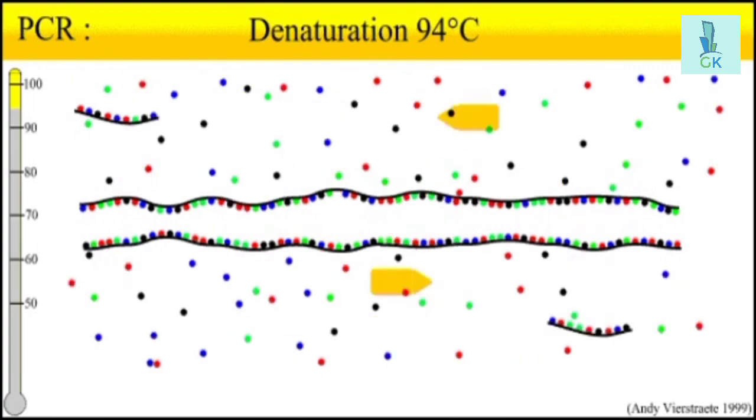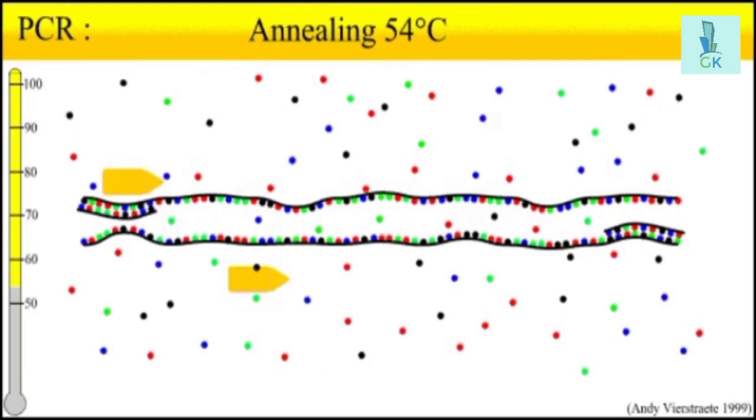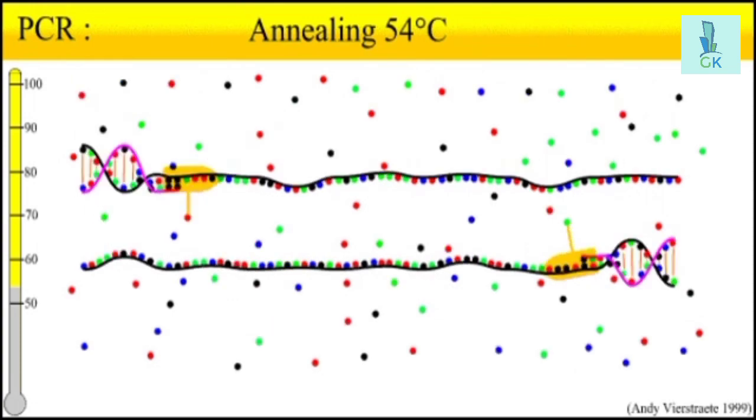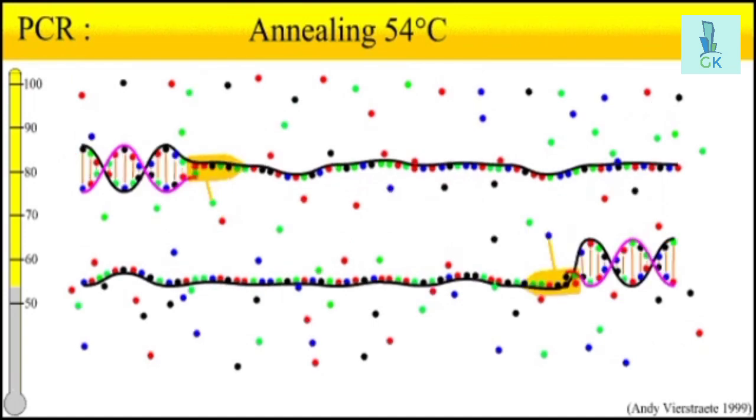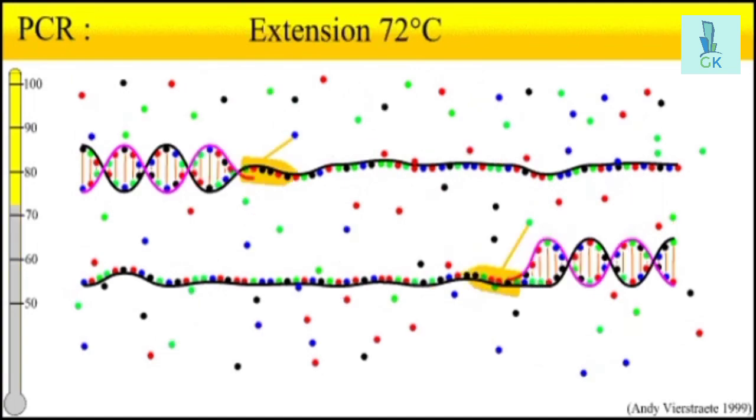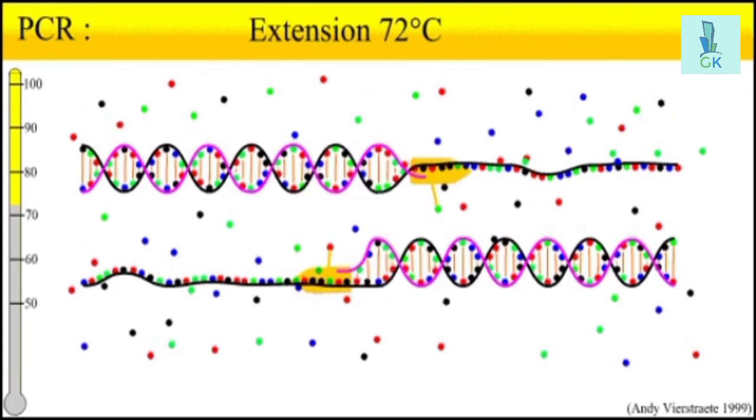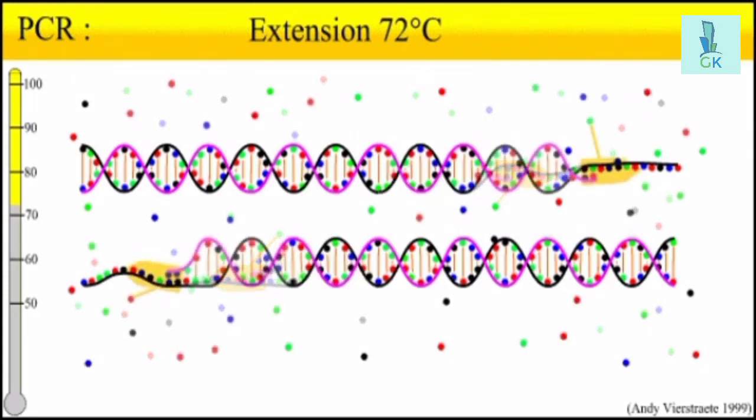Three steps: first is denaturation where we separate the strands. Temperature is important which we have to remember. First step takes place at a very high temperature, that is 92 degree centigrade. Secondly is annealing which takes place at a lower temperature, that is 54 to 56 degree centigrade. Thirdly elongation, the third step.